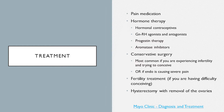Endometriosis can be treated through conservative surgery, most commonly if a woman is experiencing infertility — specifically if they're trying to conceive and having difficulty — or if endometriosis is causing severe pain that interferes with daily functions. Fertility treatment is also an option, as endometriosis is oftentimes diagnosed when people are having difficulty conceiving. In the most serious cases, a total hysterectomy is another treatment option.